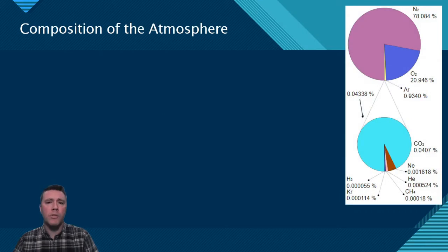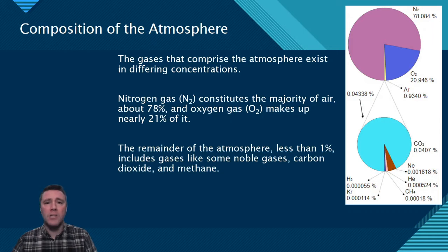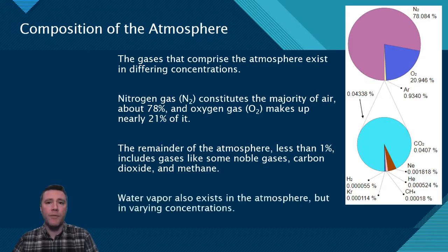Most of Earth's atmosphere, about 78% of it, is nitrogen gas along with nearly 21% oxygen, making up over 99% of atmospheric gases. The remaining gases in trace amounts include carbon dioxide, methane, and some noble gases. Water vapor also exists in the atmosphere, but in varying concentrations, depending primarily on air temperature.